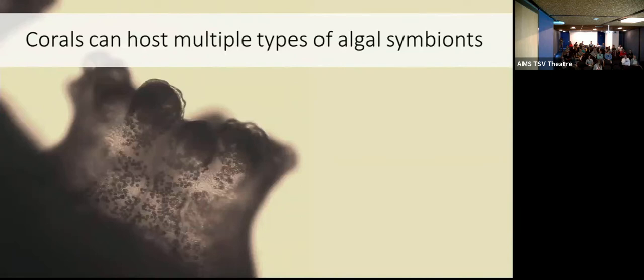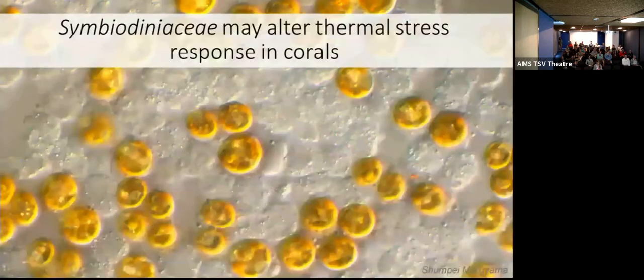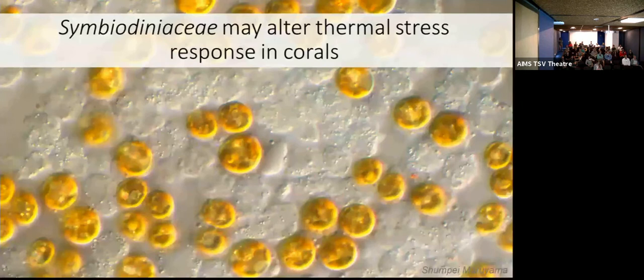And we have two main ways that the corals get these symbionts. They're either born with no symbionts, aposymbiotic, and then they get them from the water column, or they're vertically transmitted. And I'm interested in a particular Symbiodiniaceae that may alter the thermal stress response in corals.